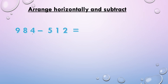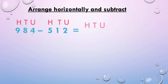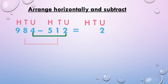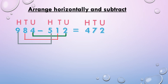Next, 984 minus 512. We write the place values and subtract units place numbers first. 4 minus 2, we get 2, and write it in the units place. 8 minus 1, we get 7, and write 7 in the tens place. Hundreds place: 9 minus 5, we get 4. So 984 minus 512, we get 472.